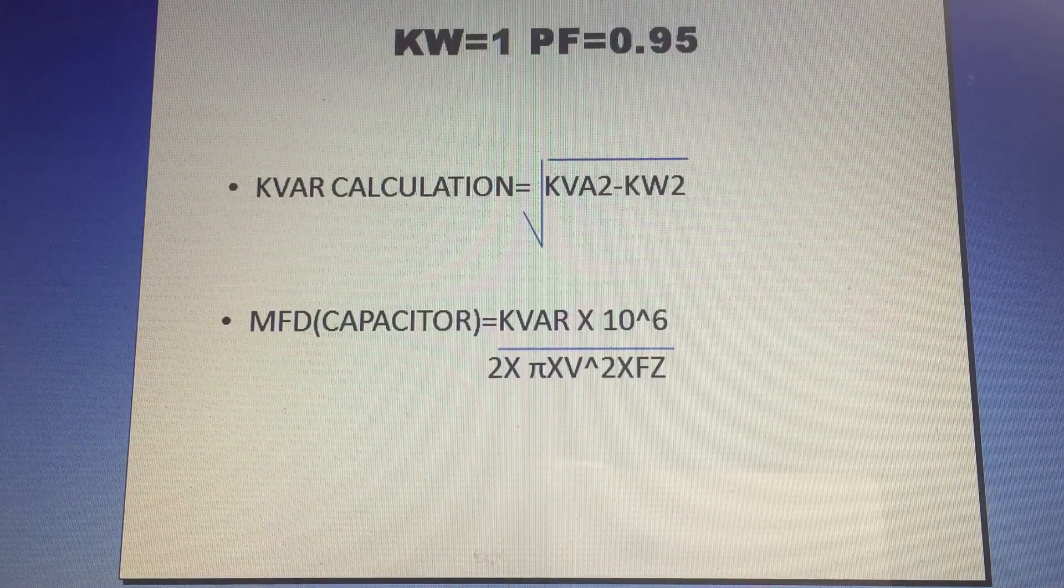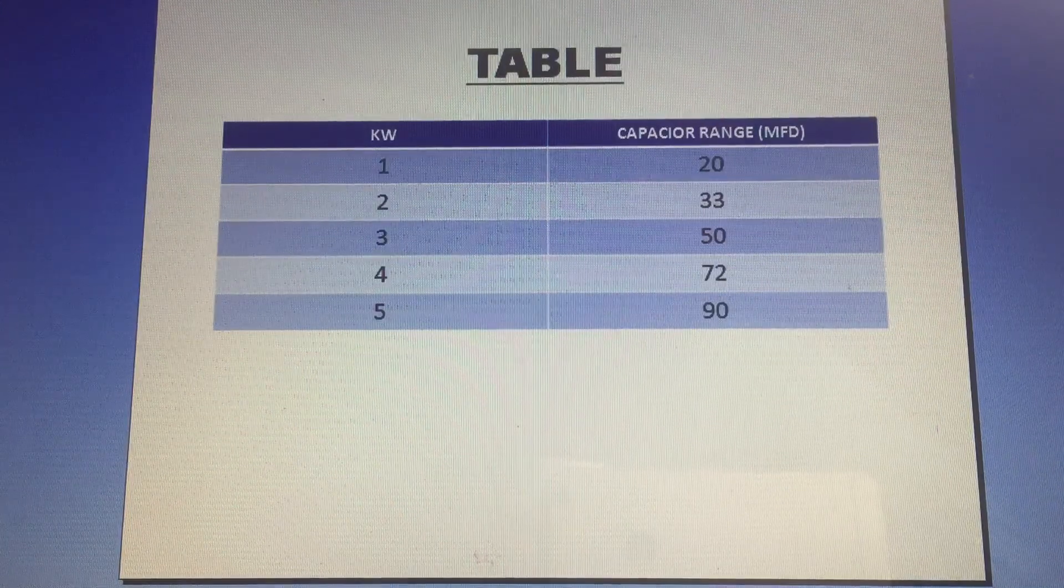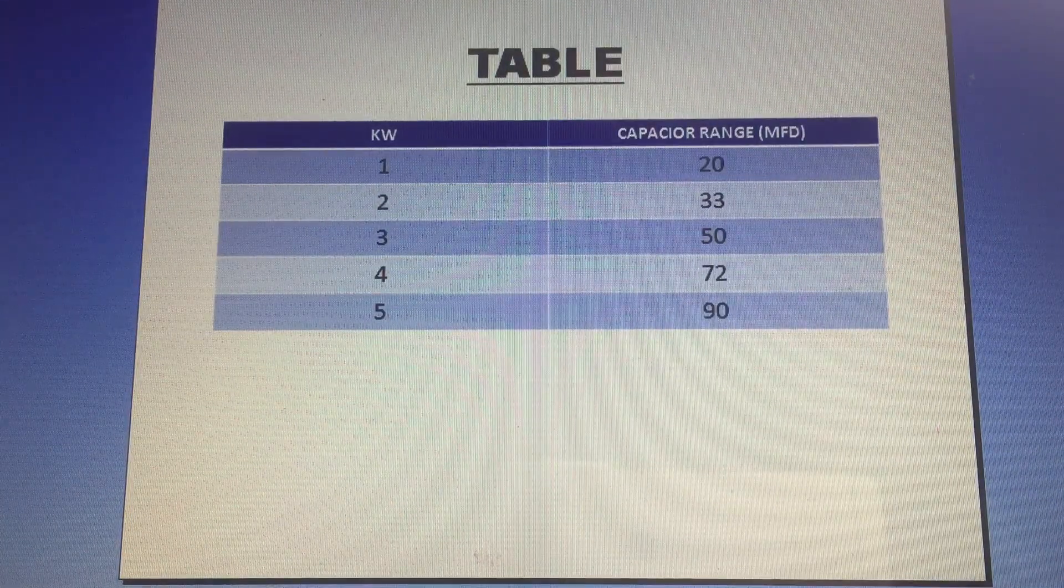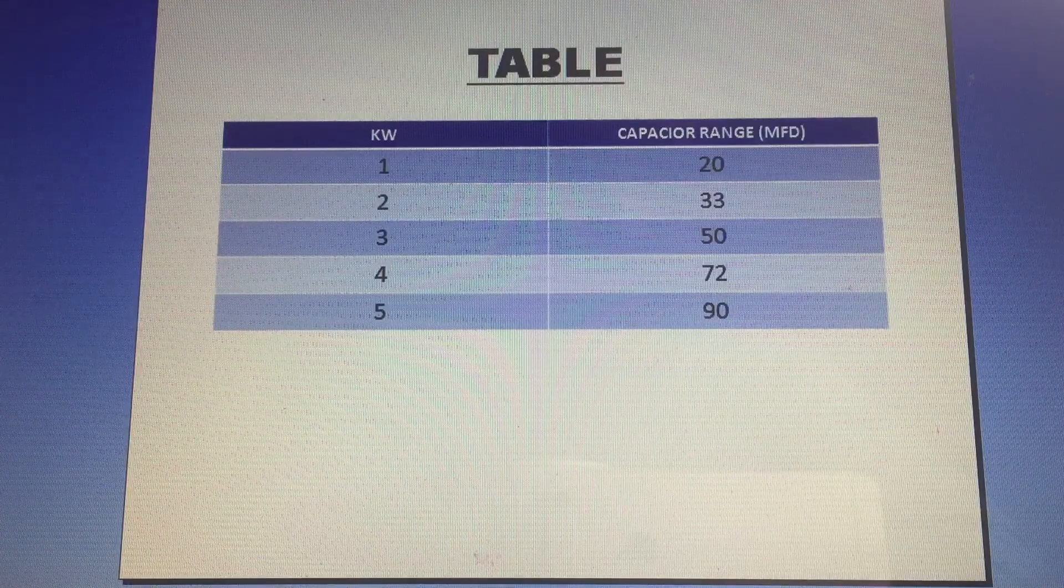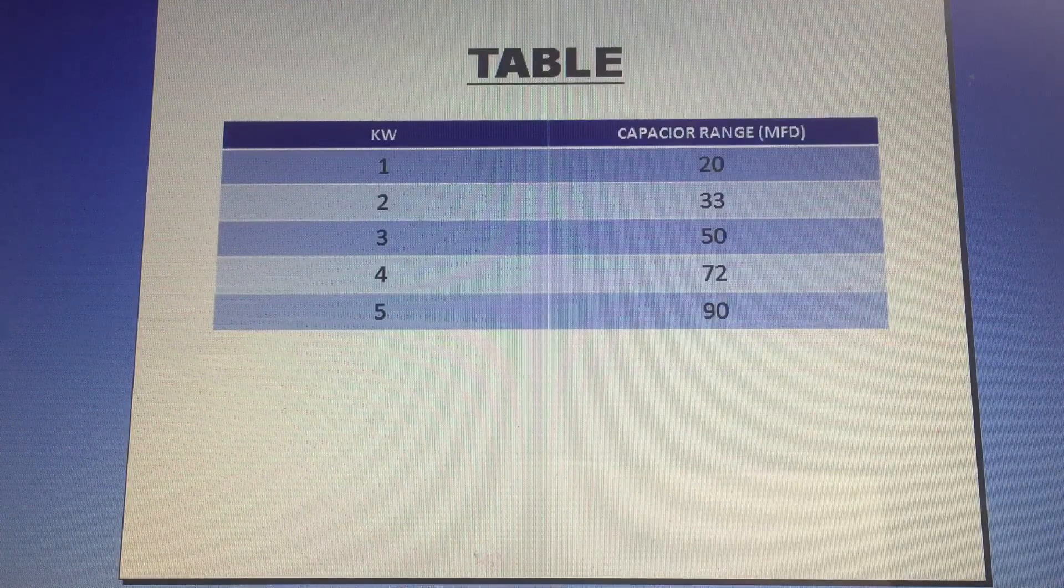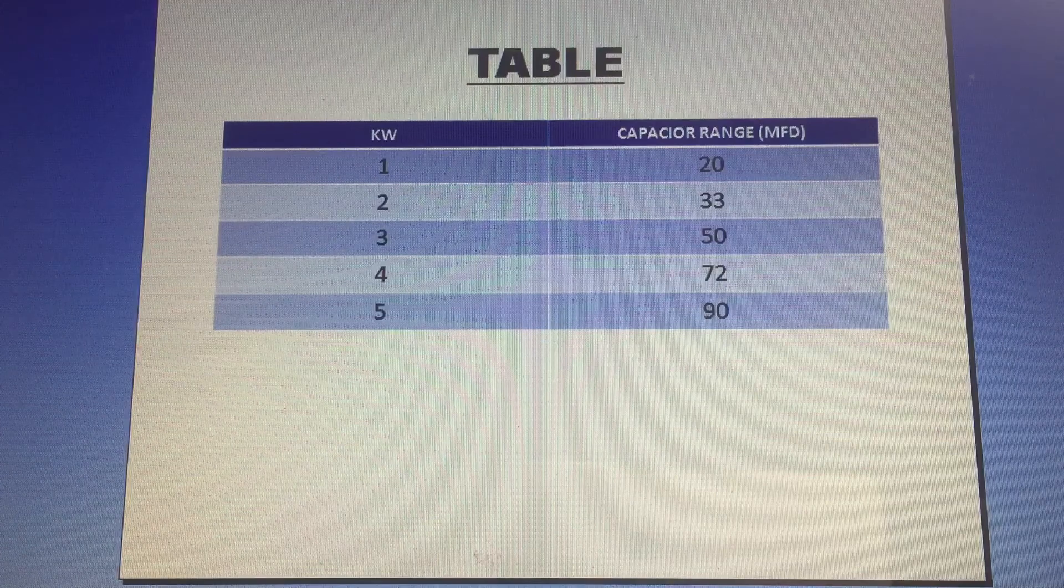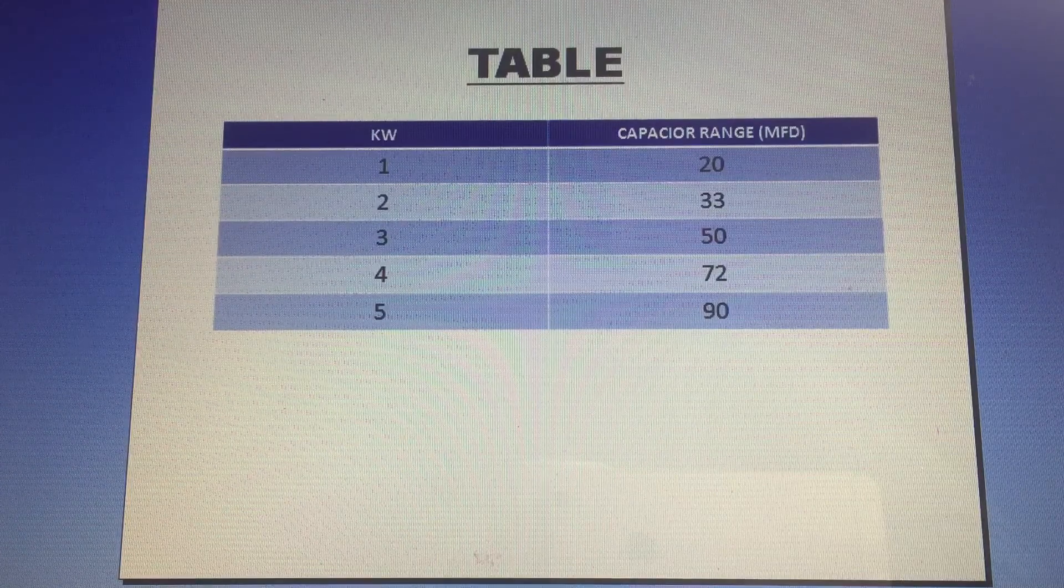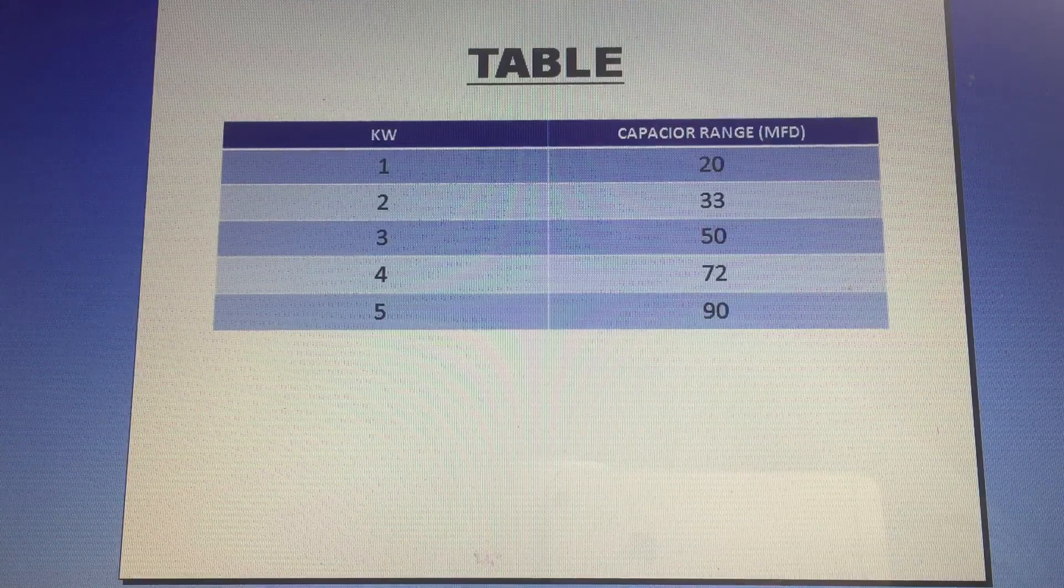If you do this, you get the capacitor value. I will show a table approximately. If you want to use 1 kW, use 20 MFD. 2 kW use 33 MFD, 3 kW use 50 MFD, 4 kW use 72 MFD, 5 kW use 90 MFD.